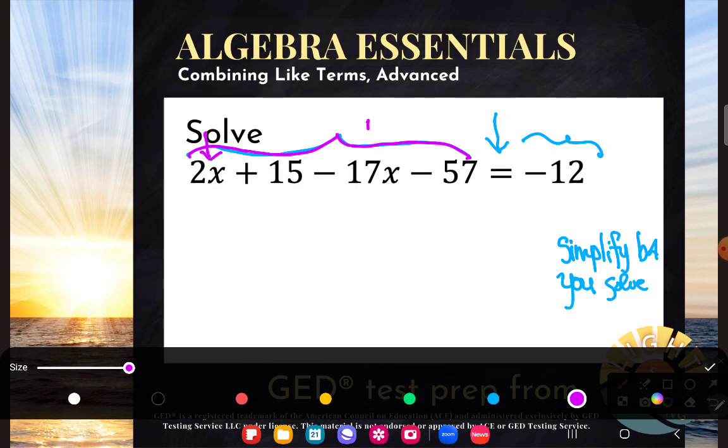There's a couple of x terms, those can combine, and there's a couple of constant terms, those can combine. And when they're on the same side of the equation, they're going to combine like they always do.